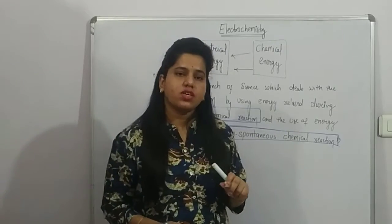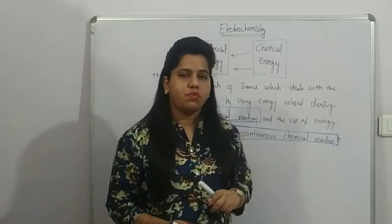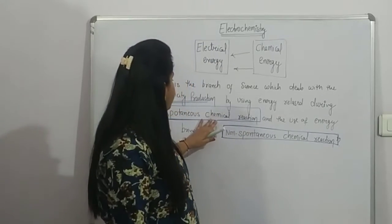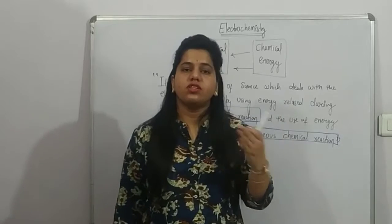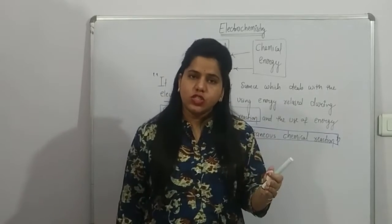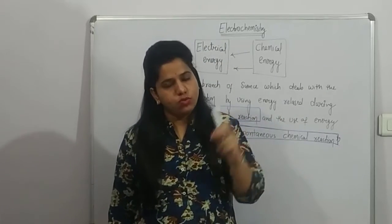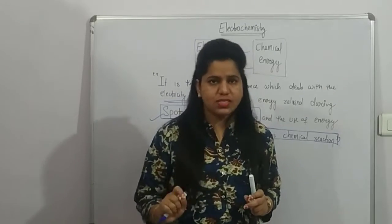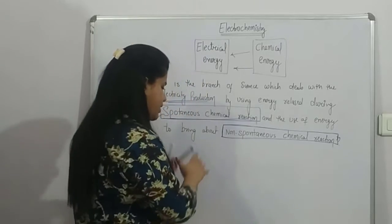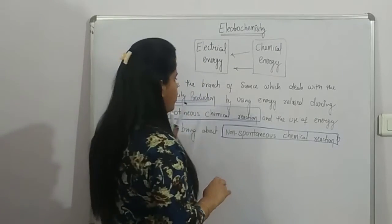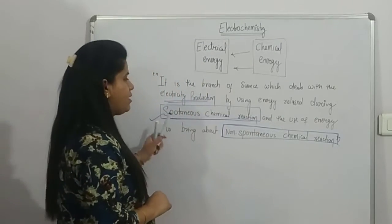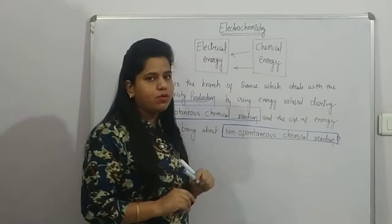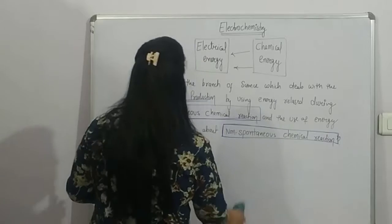So we can understand what spontaneous and non-spontaneous chemical reactions are. Spontaneous chemical reactions happen quickly and release energy; we use that energy to perform non-spontaneous chemical reactions. This should be clear. Write down the definition and try to learn it. You should know the meaning of the chapter.